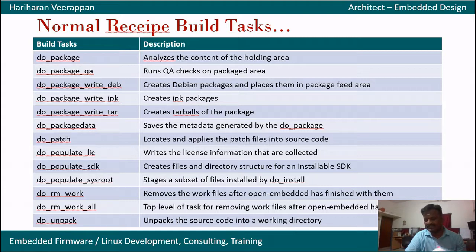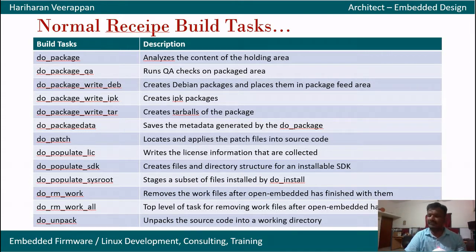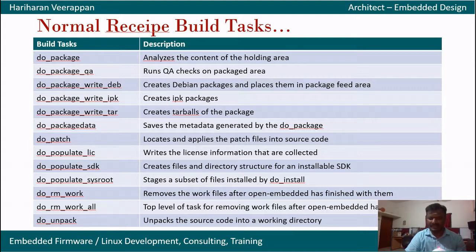do_package_data saves the metadata information generated by do_package. do_patch locates and applies patch files into the source code. For example, if we have built a Linux kernel based on BeagleBone Yocto and it does not support something like a temperature sensor — because that driver is not present in the Linux configurations — we can apply our own patch into the Linux kernel source before building using do_patch.